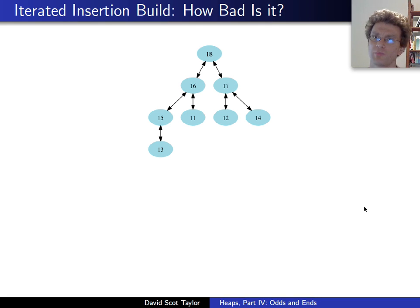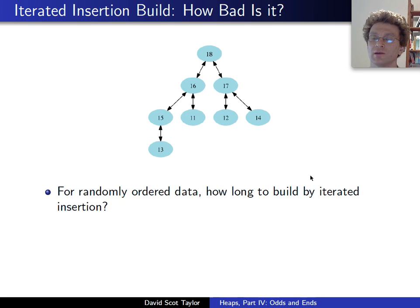The book says we're going to learn this max heapify, and now we go through, we do max heapify, we can build a heap using that. But anyway, what happens if you build by iterated insertion? How bad is that? If I just give you numbers in a random order, and I ask you to build by iterated insertion, how long does that actually take?